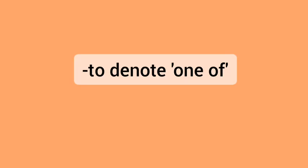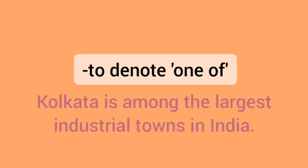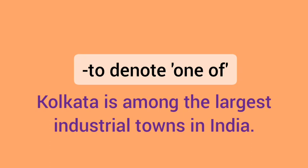Among is also used to denote 'one of' — उनमें से कोई एक। For example: 'Kolkata is among the largest industrial towns in India.' — Kolkata इंडिया में सबसे ज़्यादा बड़े industrial towns में से एक है।